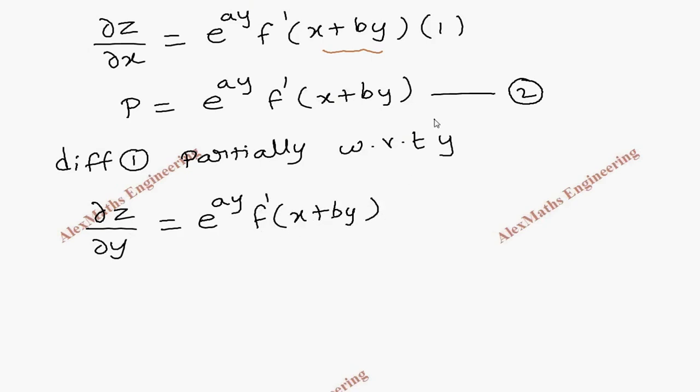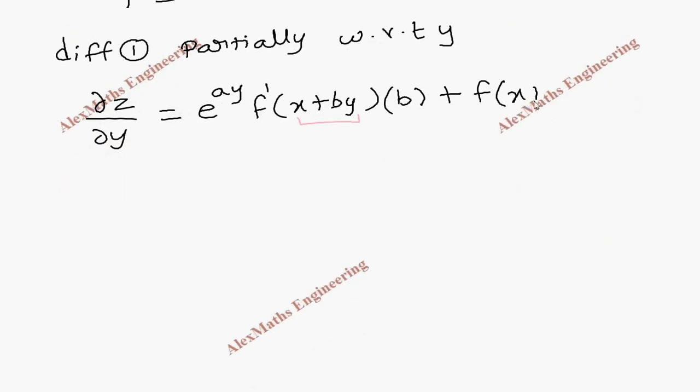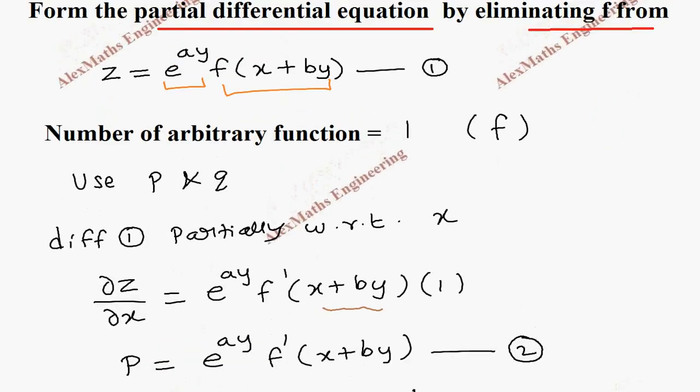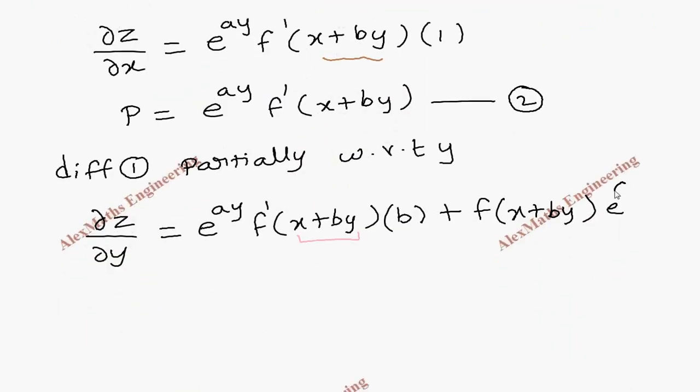Since we are following the chain rule, derivative of this will be x times 0, and by differentiation is just b. Plus we have to write the second term as it is, that is f(x + by) into first term differentiation is e^(ay) · a. Once again this will become Q equals...